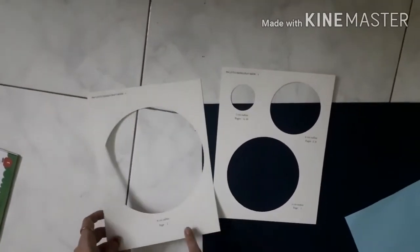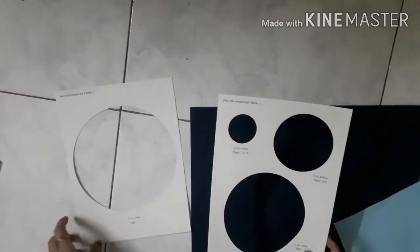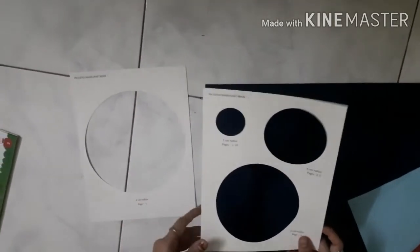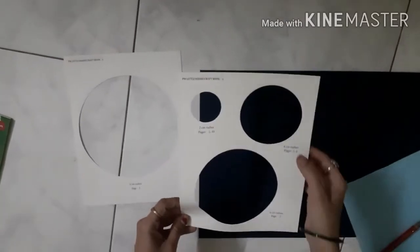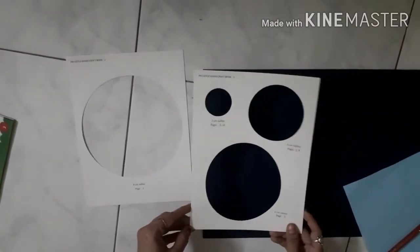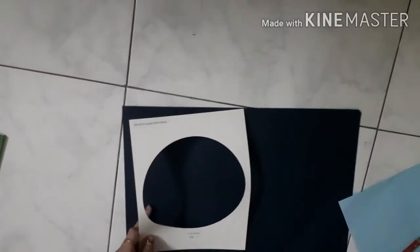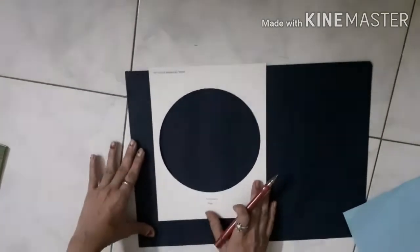There are four circle stencils: one is eight centimeter radius, then six centimeter, four centimeter, and two centimeter. You need to draw all four different measurement circles. First draw the eight centimeter circle using this stencil on marble paper.